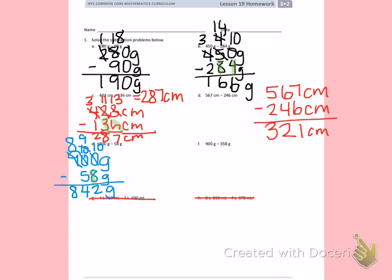Letter F is very similar. 900 grams minus 358 grams. Again, in my ones place, bigger number is on the bottom, so I need to regroup. I cannot regroup from the zero in the tens place, because there is nothing there to borrow from.